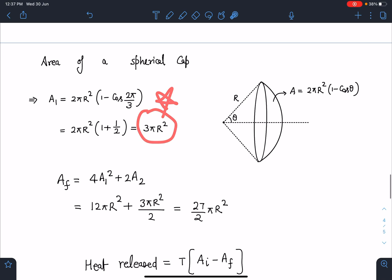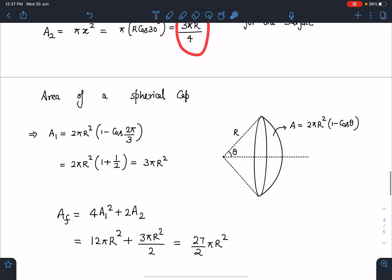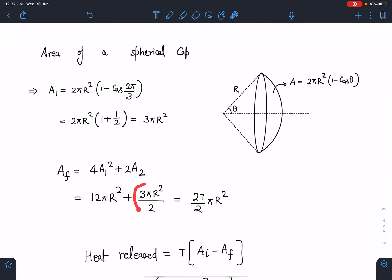So now I can write A_final as 4A₁ + 2A₂. A₁ is 3πR², so 12πR² it will give. And A₂ is 3πR²/4, so double of that will be 3πR²/2.